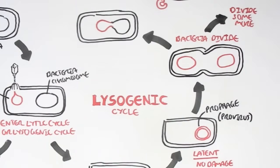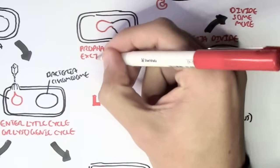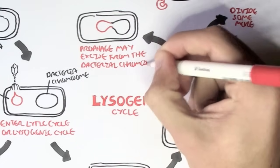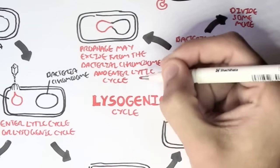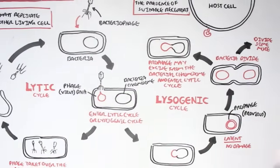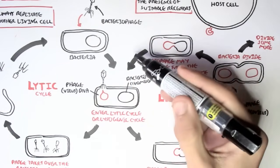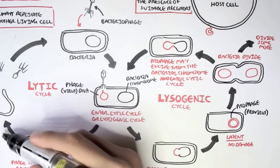So the prophage DNA may excise from the bacterial chromosome, and then it can enter the lytic cycle. Because the phage DNA is out of the bacterial chromosome, it can then enter the lytic cycle and cause the bacteria to burst.